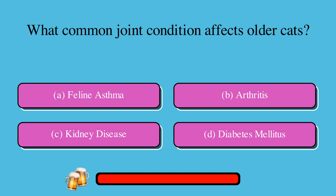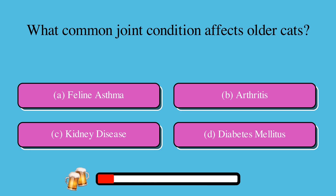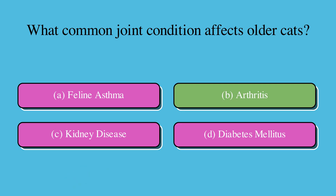What common joint condition affects older cats? A. Feline asthma, B. Arthritis, C. Kidney disease, or D. Diabetes mellitus. The correct answer is B. Arthritis.